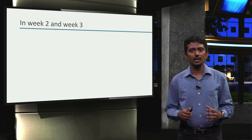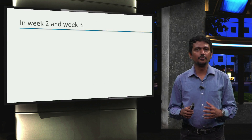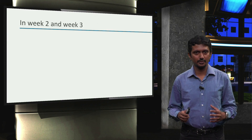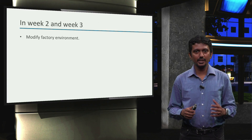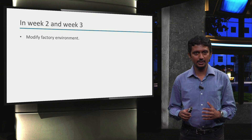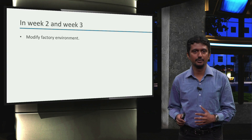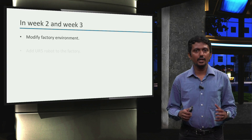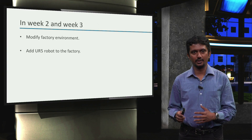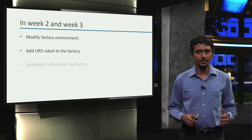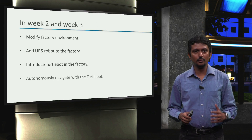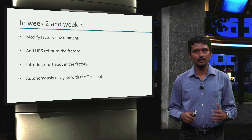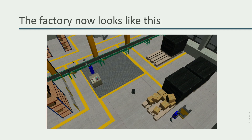Let's first recollect what goals we have reached so far in the course. We modified our factory environment by removing some of the bins and moving one bin to a new location. We added the UR5 robot to our factory environment. We introduced the turtle bot in our factory and also autonomously navigated the turtle bot. And our factory looks like this now.